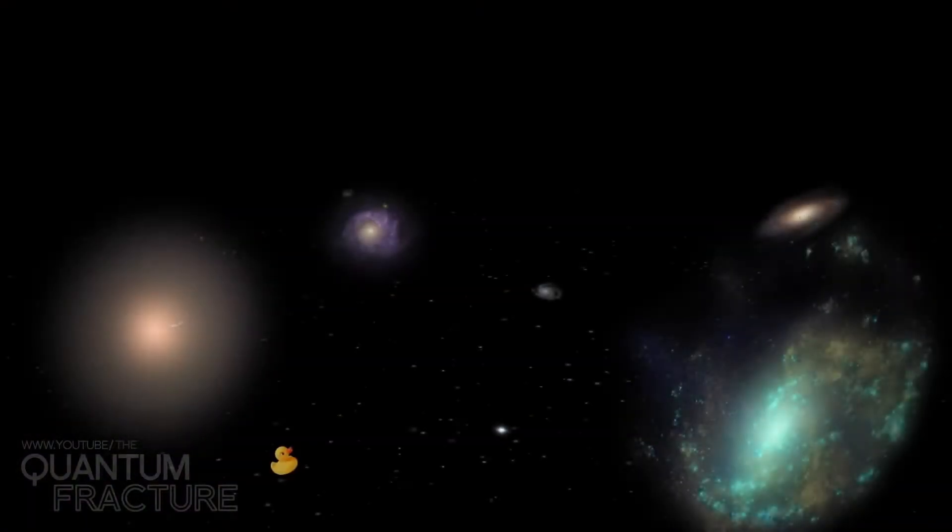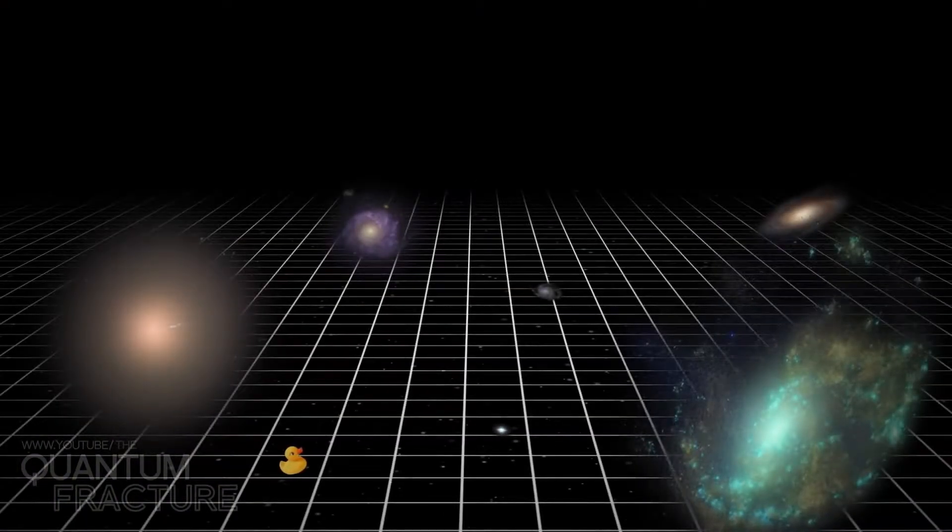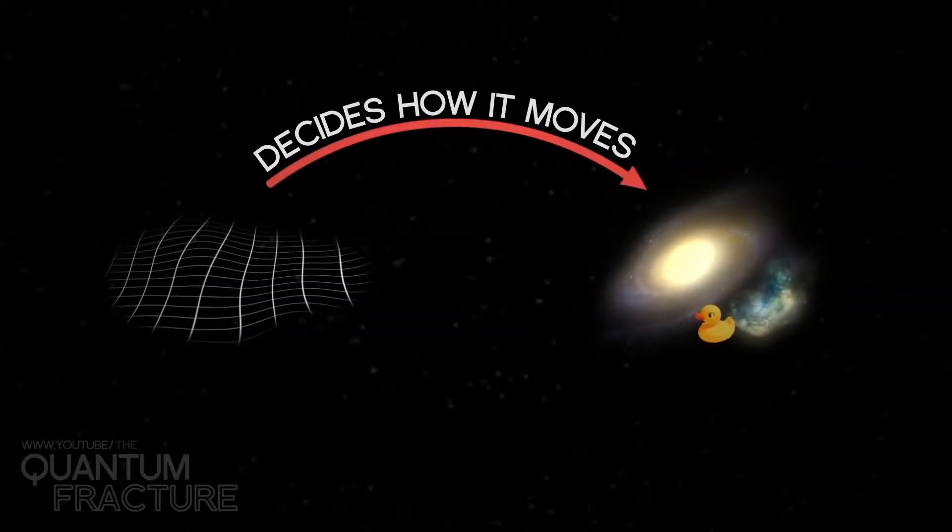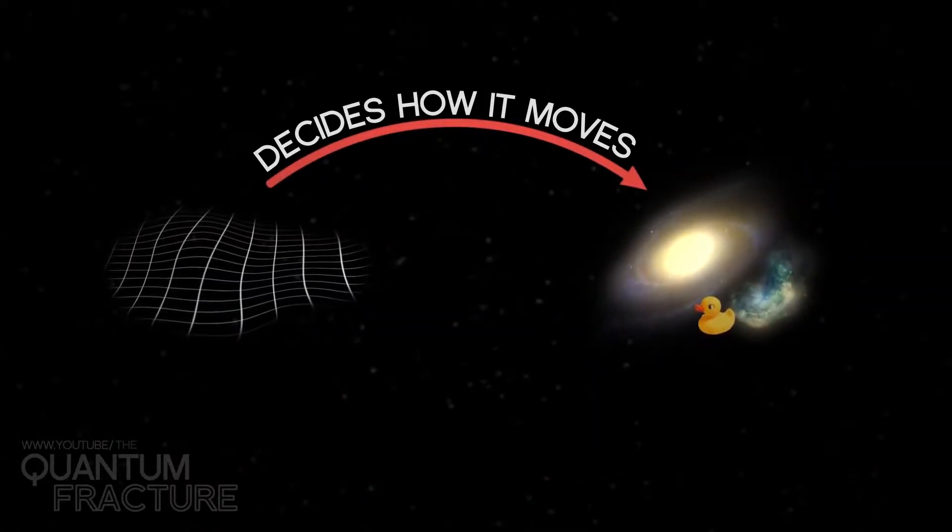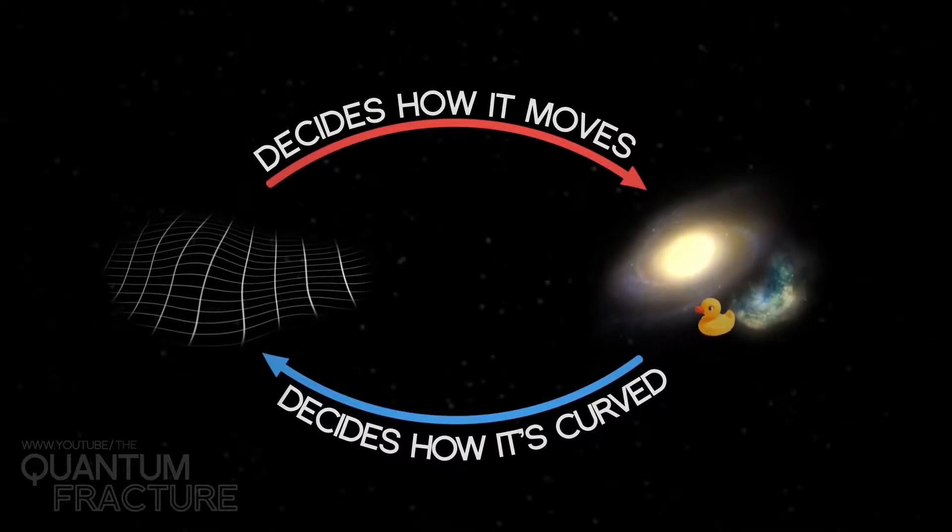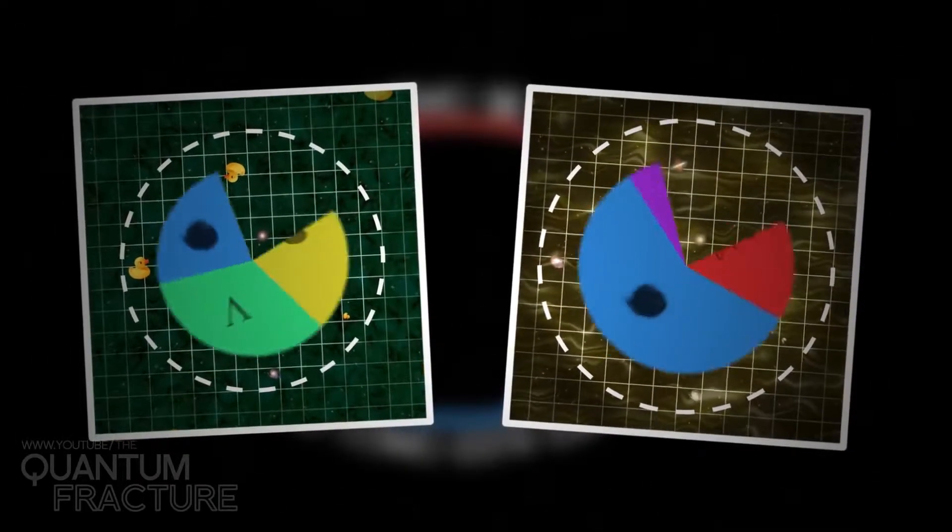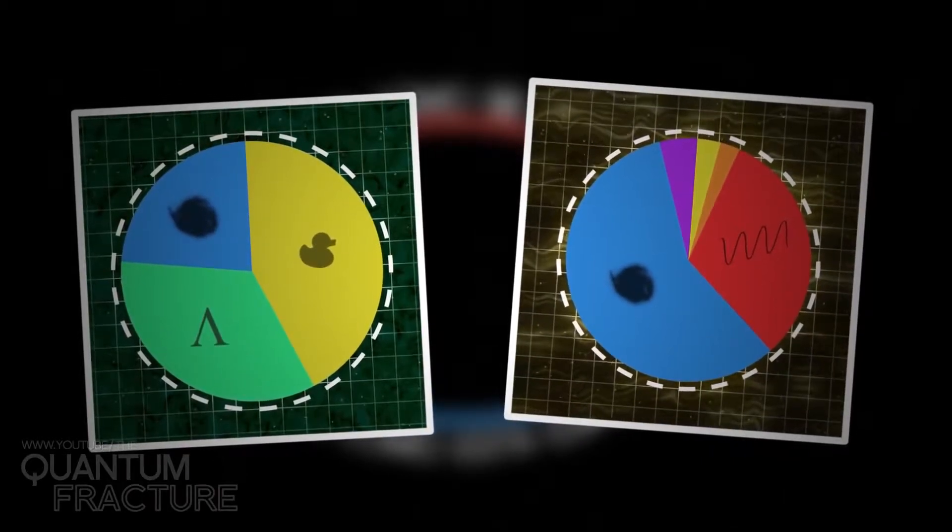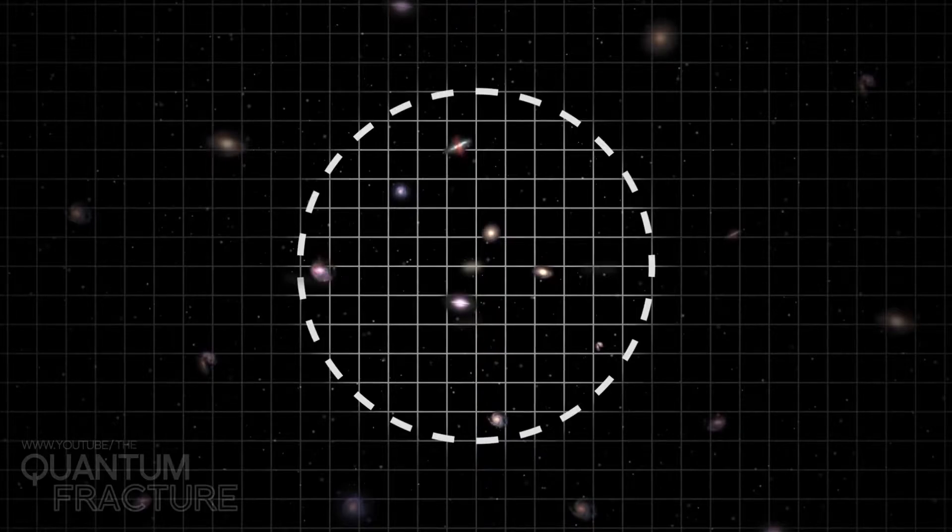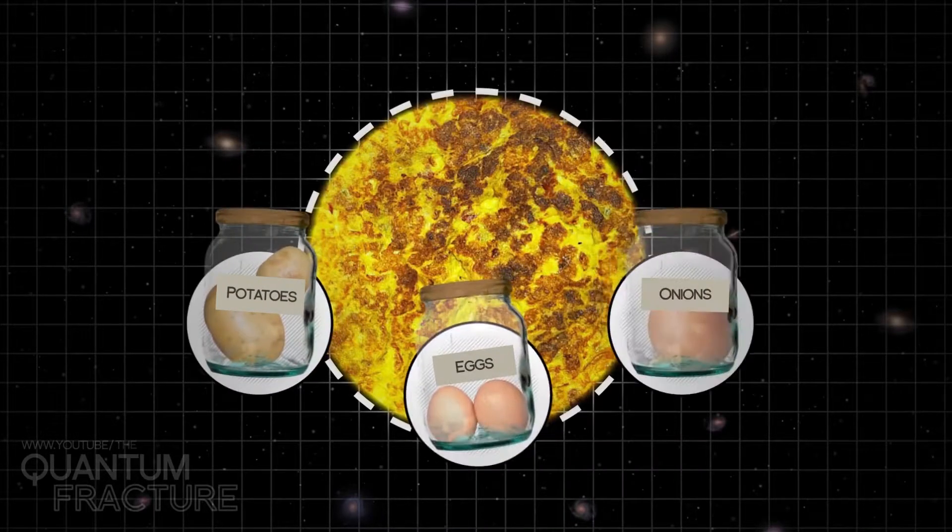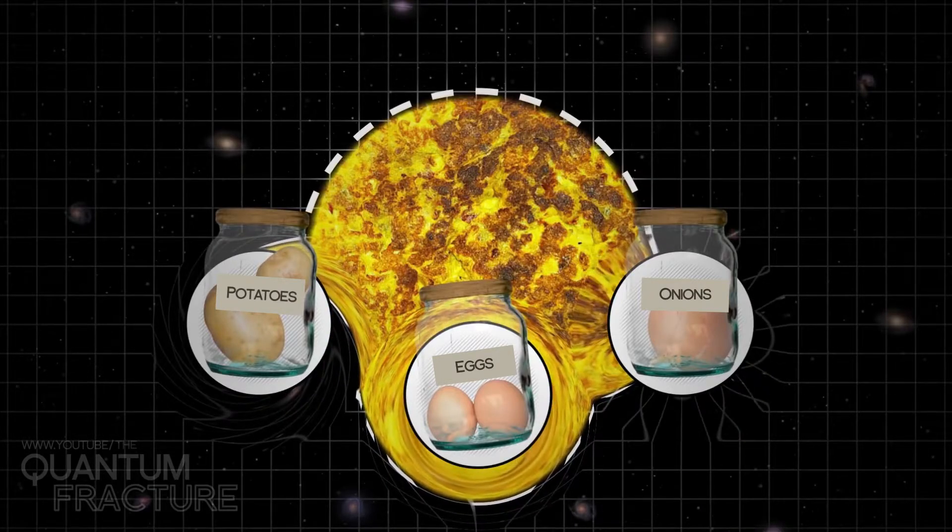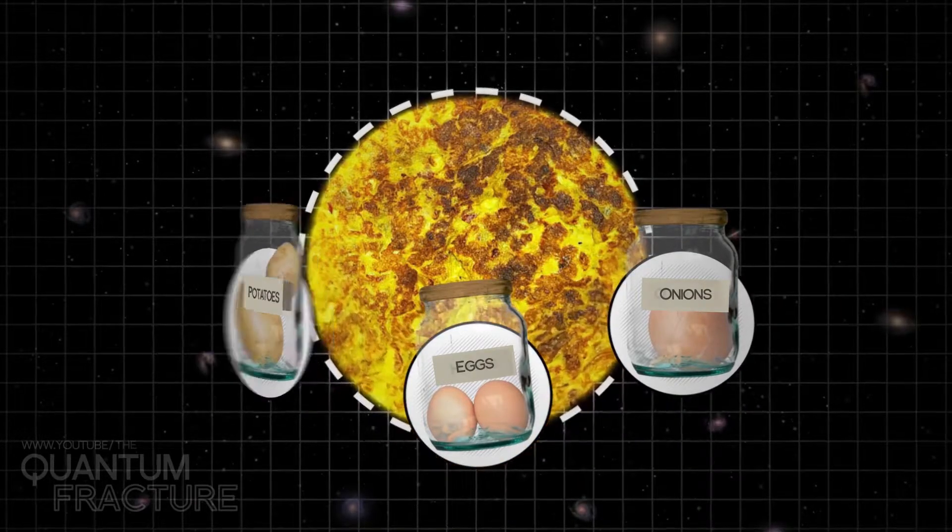A universe consists of things and the medium in which those things move, space-time. In fact, one of Einstein's greatest ideas was that space-time, rather than being a mere setting, is actually defined by its contents. So one universe differs from another depending on the things it contains. You might say that these universes are like a potato omelet. They can be made with just three ingredients, each of which has different effects on space-time.